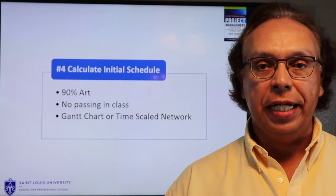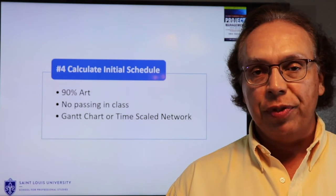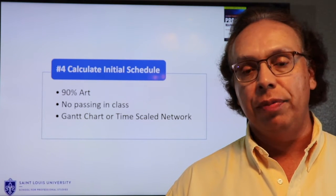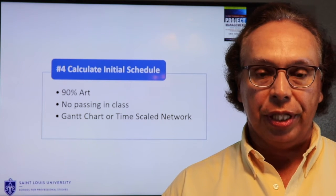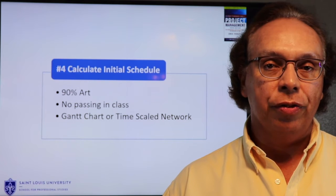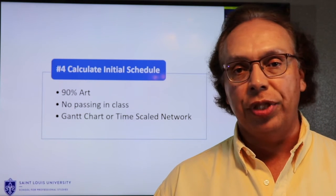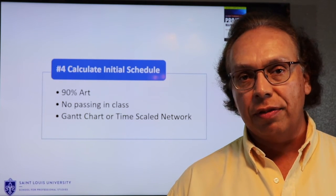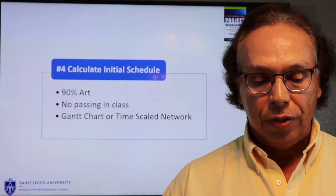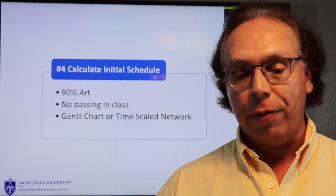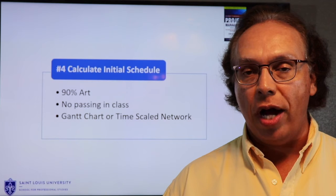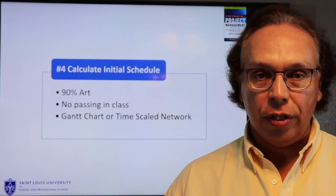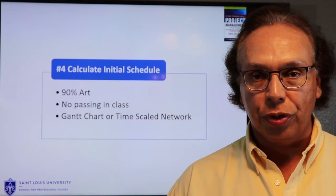Step four is calculating the initial schedule, or simply building the schedule. As we've said, project management is both art and science. Scheduling, just like the WBS process, is 90% art — it takes time to get used to. Once you do it, you'll continue to iterate your schedule over time in what we call rolling wave planning. For this class, we will not be covering the critical path process, so you don't have to study the forward pass, backwards pass, or float. However, that is required for the PMP exam and would be part of the PMP prep course. Gantt charts or time-scale network diagrams are also optional for your course project.